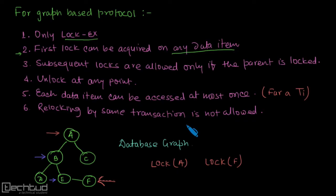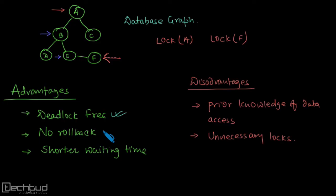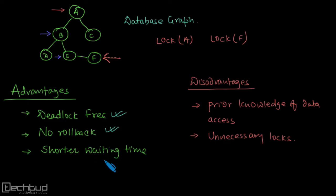Now for the advantages of graph-based protocol: since there is no growing phase — unlike two-phase locking where the growing phase could lead to deadlock — graph-based protocol is deadlock-free. Also, there is no dirty read situation here, so there is no need for rollback. And since unnecessary locks are fewer, there is an overall increase in efficiency and reduction in waiting time.